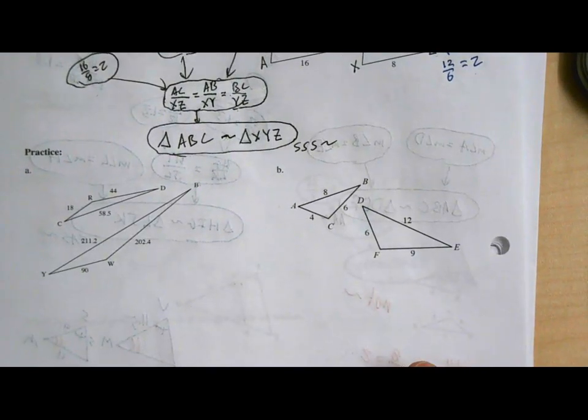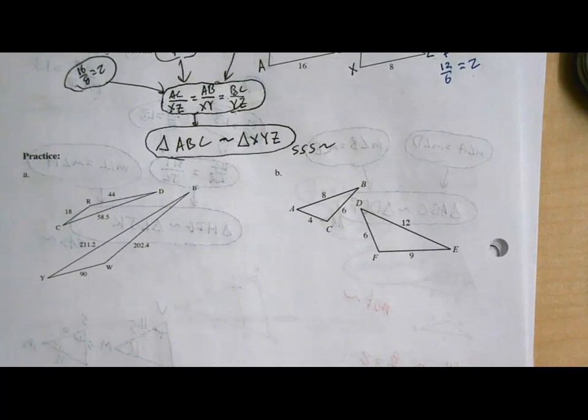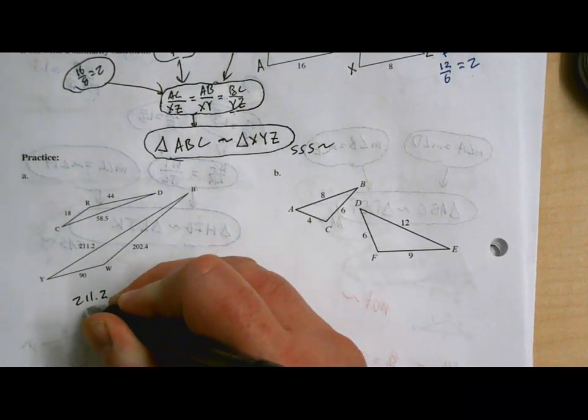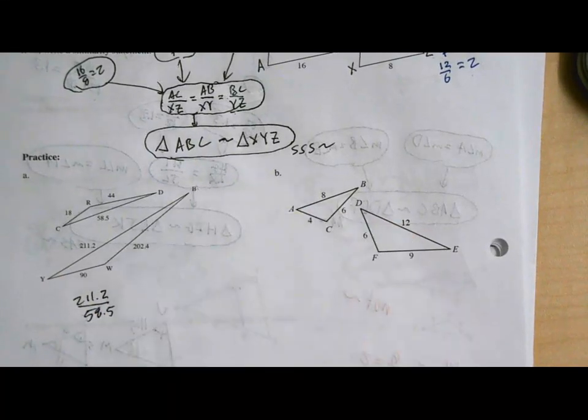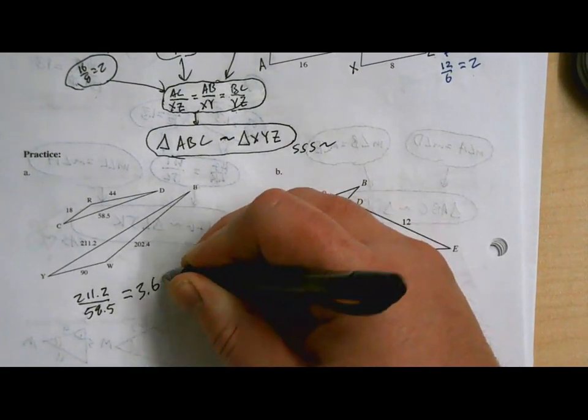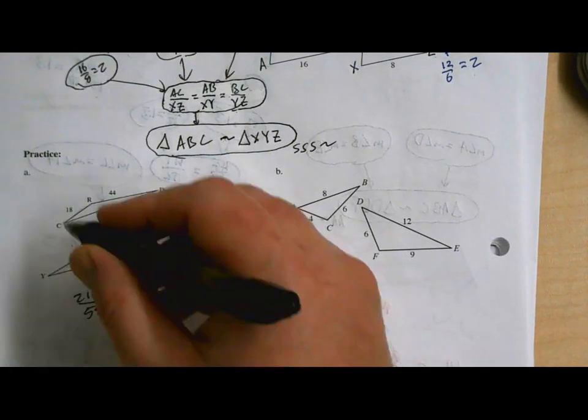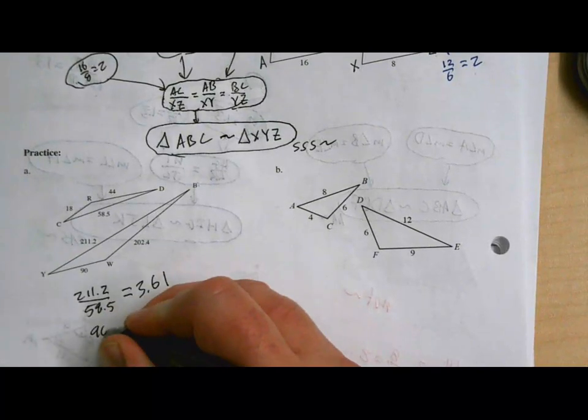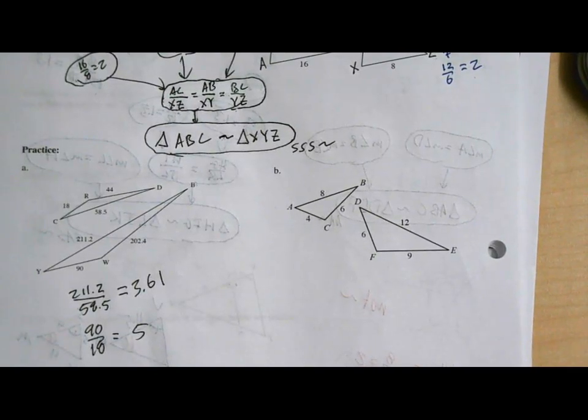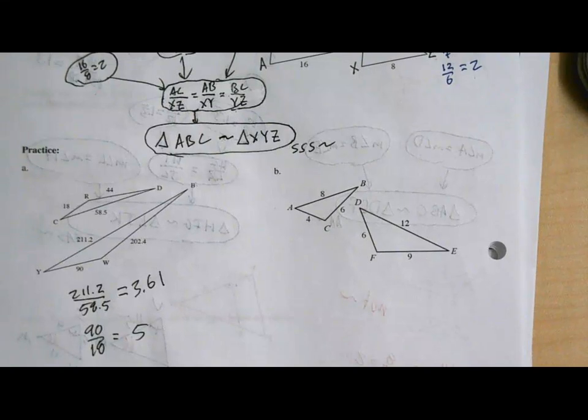All right. I would like you to do one more of these proofs. One of these pairs of triangles is similar and the other one is not. Anybody find the one that's not yet? The first one is not, because when you do 211.2 over 58.5—those are the two biggest sides—what do we get when we do that? 3.61-ish. And then when I do the smallest, which would be 18 and 90, so 90 divided by 18 is 5. I already know they're not similar, right? Because we only did two of the ratios and they're not even equal yet.